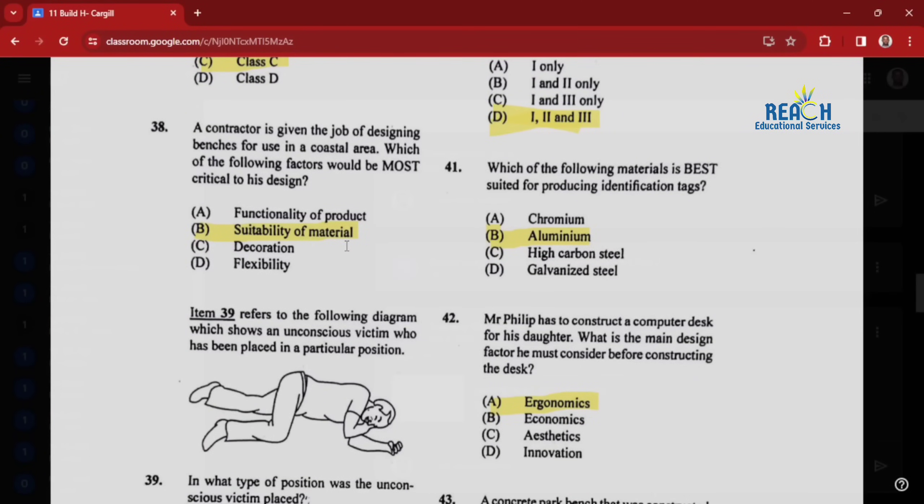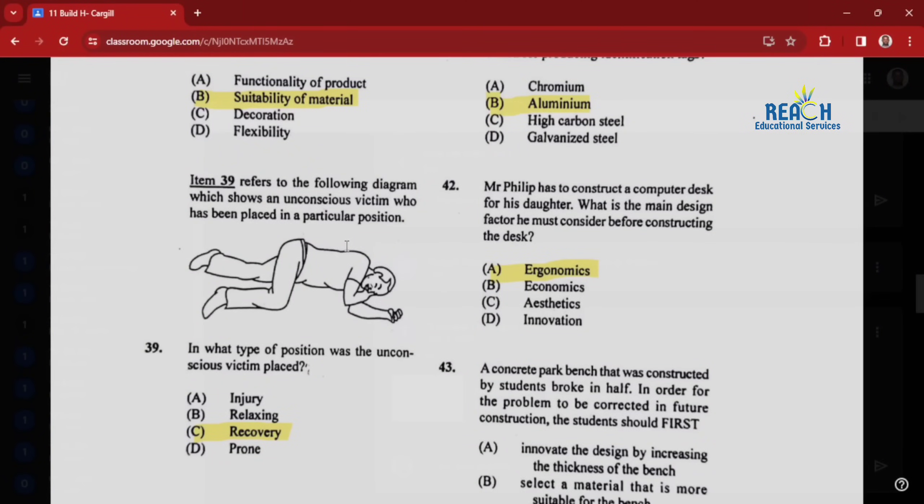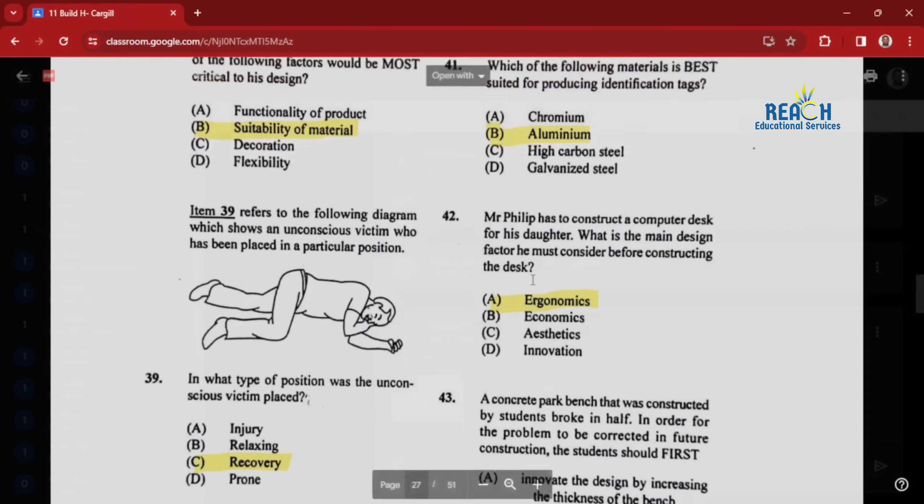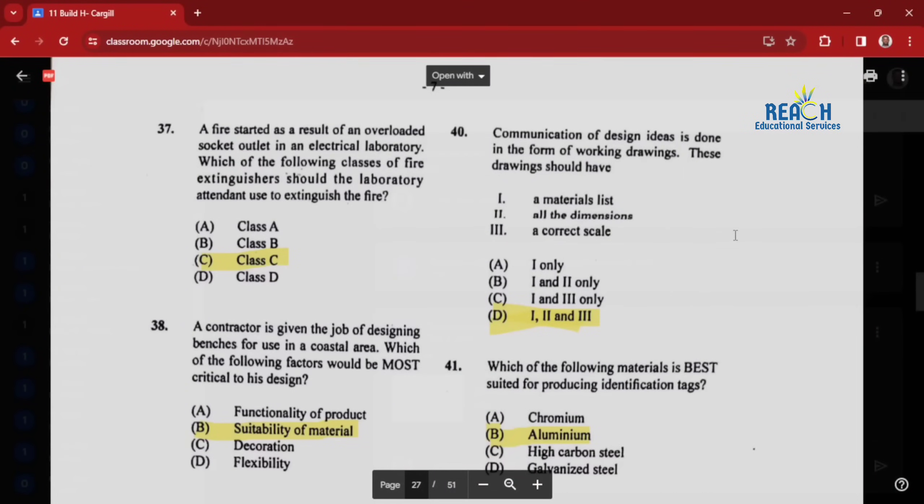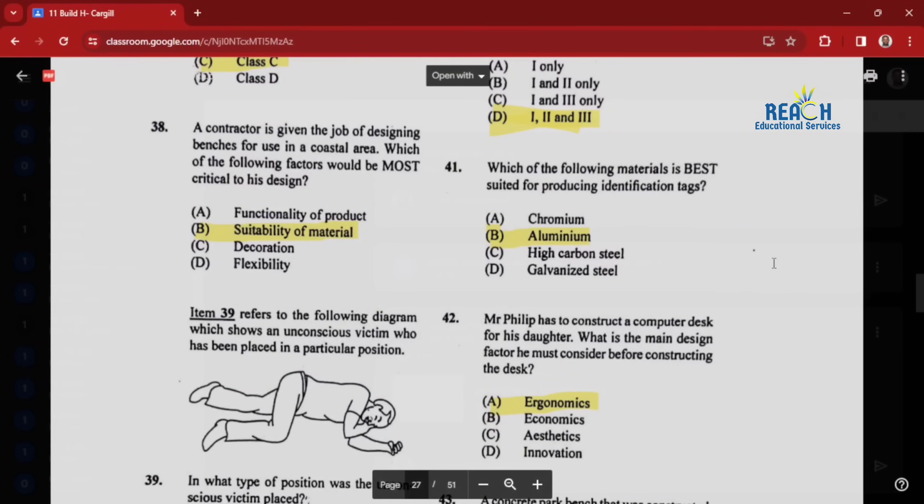Question thirty-eight: a contractor is given the job of designing benches for use in a coastal area. Which factors would be most critical to the design? Suitability of the material. Item thirty-nine refers to the following diagram which shows an unconscious victim who has been placed in a particular position. In which type of position was the unconscious victim placed? That's the recovery position, and you see this in a lot of past papers. Question forty: communication of design ideas is done in the form of working drawings. These drawings should have a materials list, all the dimensions, and a correct scale. It should have all of those, so one, two, and three. Question forty-one: which material is best suited for producing identification tags? That would be aluminum because it's a very light metal.